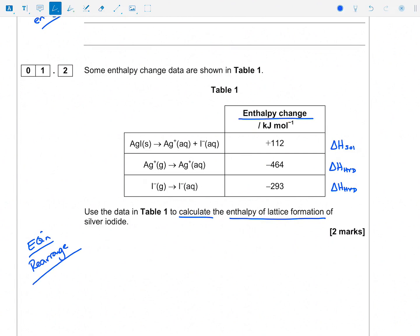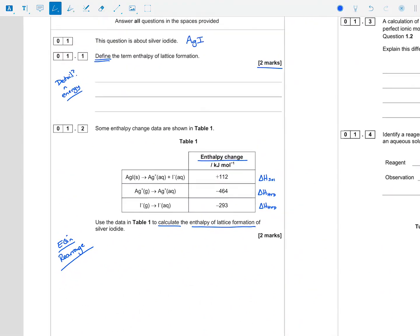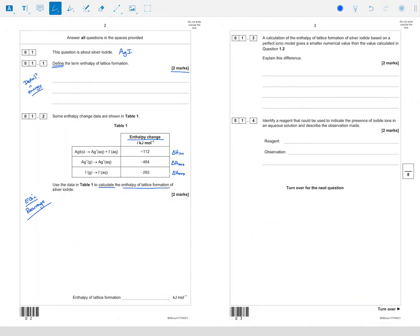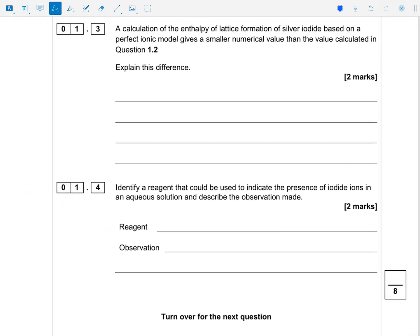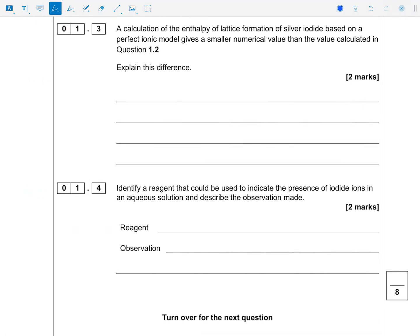1.3 - the calculation of the enthalpy of lattice formation of silver iodide based on a perfect ionic model gives a smaller numerical value than the value calculated in 1.2. Explain this difference.